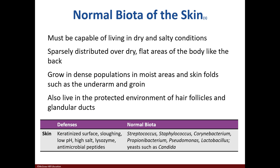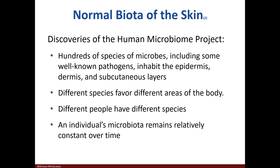In order for a microbe to survive on our skin, it must withstand dry and salty environments. The majority of our normal flora on our skin can be found in moist environments like the underarms and groin. Some normal biota that we could find include Staphylococcus, Pseudomonas, and Candida. The Human Microbiome Project identified hundreds of different species of microbes, and while we all differ in the types of species we have, our normal microbiota will remain relatively constant.